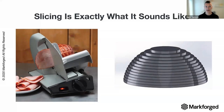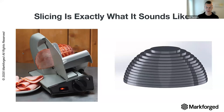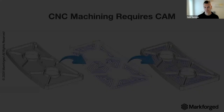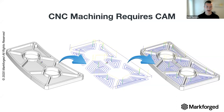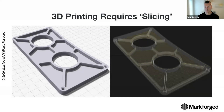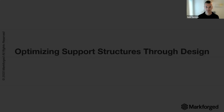Think of slicing like a deli meat slicer — you've got your big ham, your CAD file essentially, and the meat slicer generates those discrete 2D layers. Your part is then produced one layer at a time, each on top of the previous. If you're familiar with CNC and CAM, you start with a block of material and create a tool path to remove material. In 3D printing, slicing does the same thing but creates tool pathing to add matrix material and continuous fiber from a raw spool rather than a block.